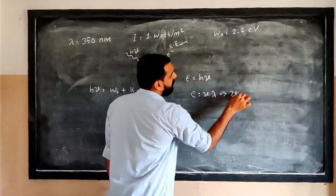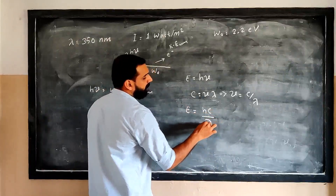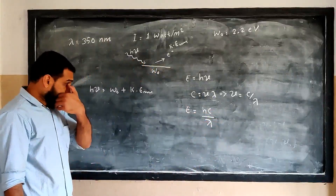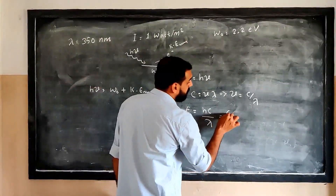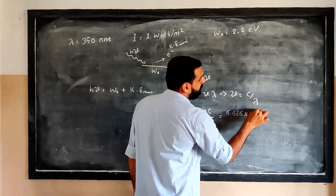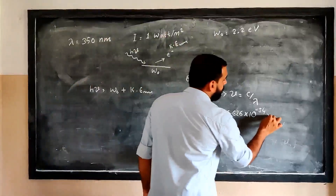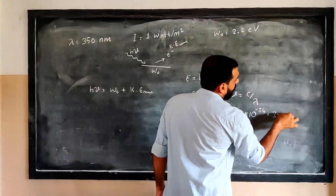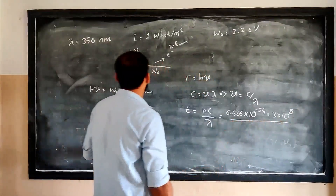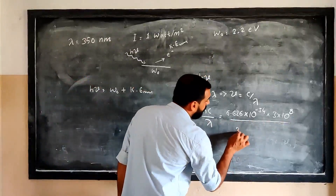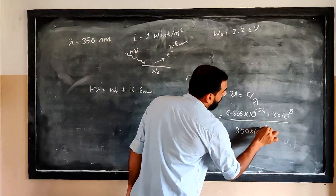E equals hc divided by lambda. We substitute our values: h equals 6.626 × 10⁻³⁴ joule-second, c equals 3 × 10⁸ meter per second, and lambda equals 350 nanometer, which is 350 × 10⁻⁹ meter.